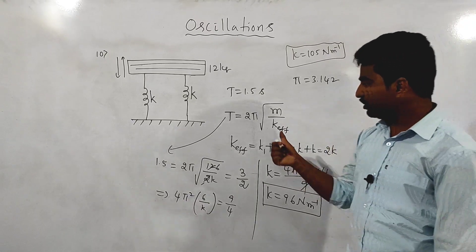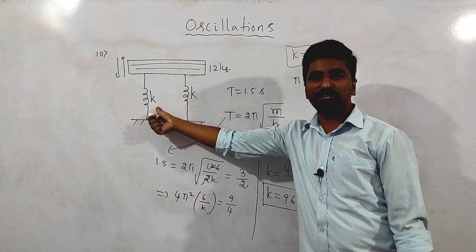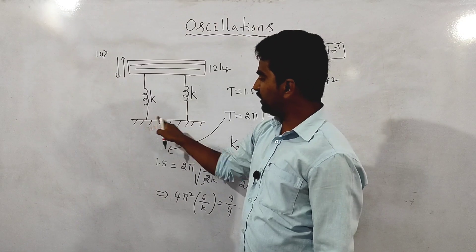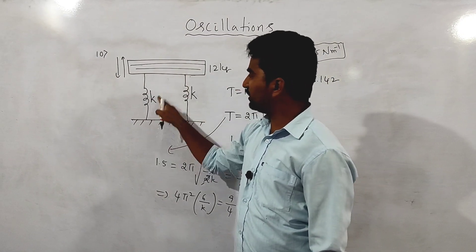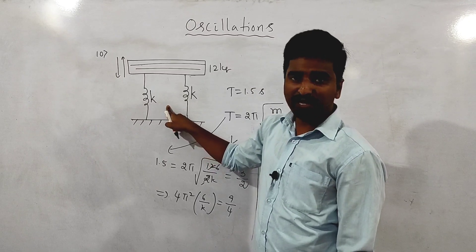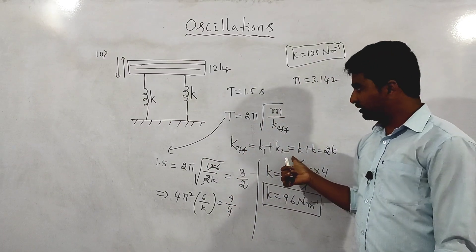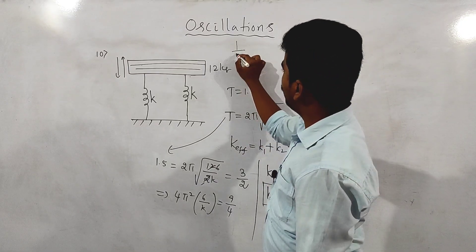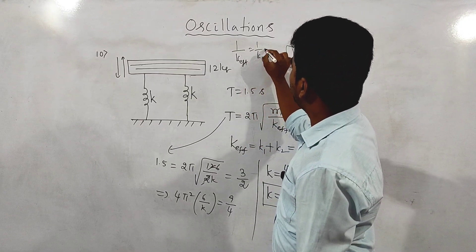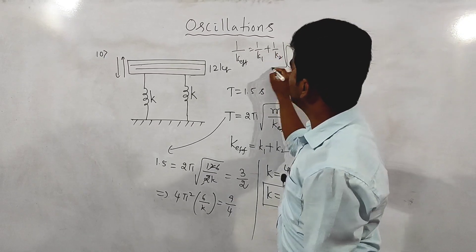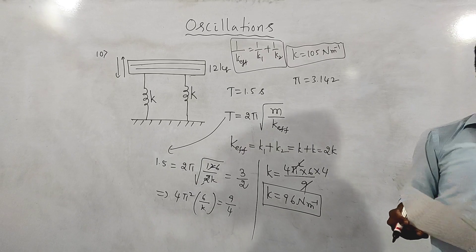Important note: the springs here are in parallel combination — both ends are connected together. In parallel, k effective equals k1 plus k2. In the series case, 1 divided by k effective equals 1 divided by k1 plus 1 divided by k2. For this question, option A is correct.